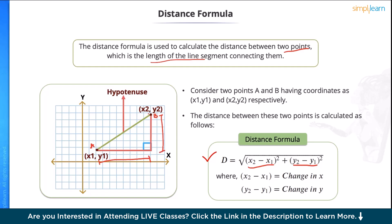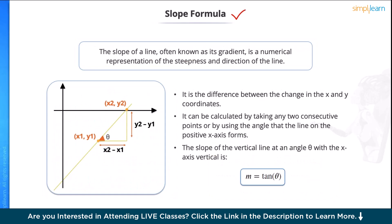To find the distance between point A and B, we need to get the hypotenuse, hence D. The slope formula. The slope of a line often known as its gradient is a numerical representation of steepness and the direction of the line. It is the difference between the change in x and y coordinates change in x and y.